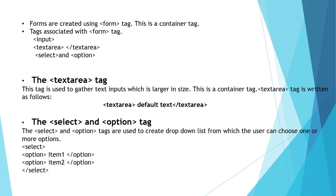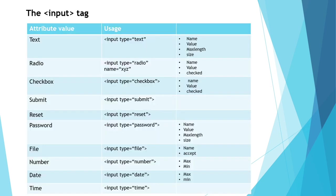For the select and option tags, when we have to create a dropdown list to provide choices to the customer, we use select and option tags. We open the select tag, write the different options to give to customers, and then close the select tag. For the input tag, there are different attribute values, and it will be more clear once we solve a question related to this form.